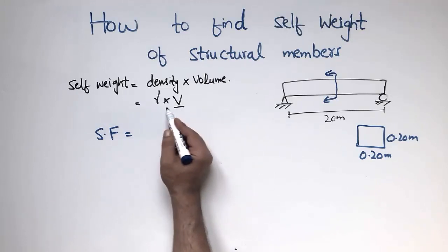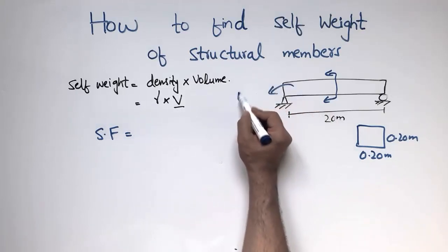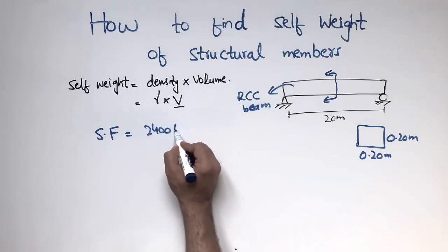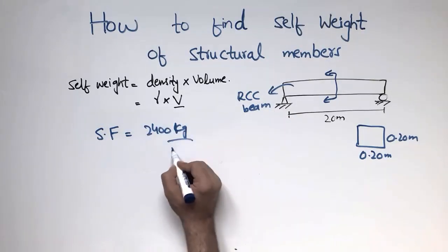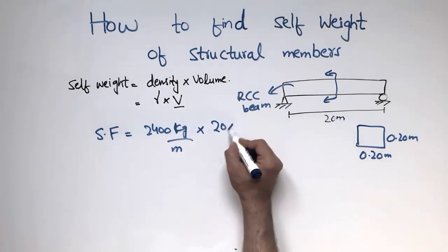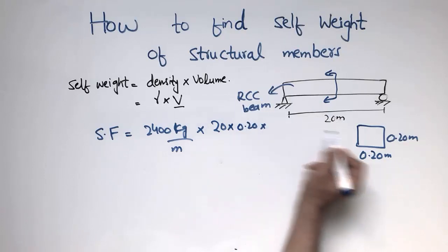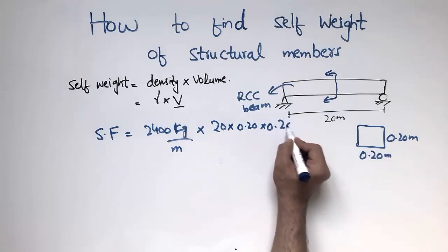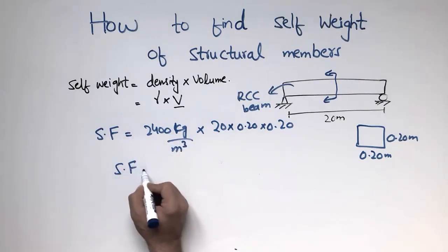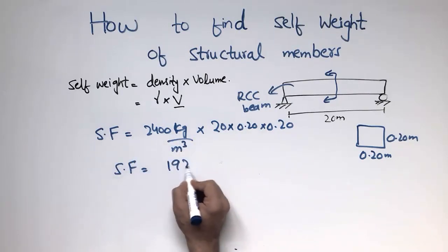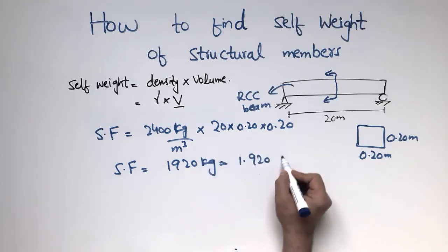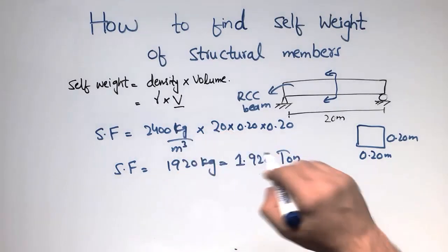The self-weight can be easily found by multiplying the density and volume. Since this is also an RCC beam, the density is 2400 kilograms per cubic meter. Multiplying by the volume: 20 meters (length) × 0.2 meters (width) × 0.2 meters (height), we get a self-weight of 1,920 kilograms, which equals 1.920 tonnes.